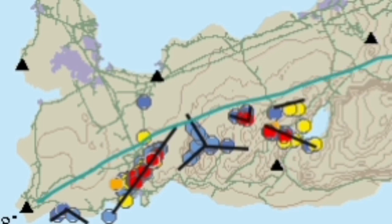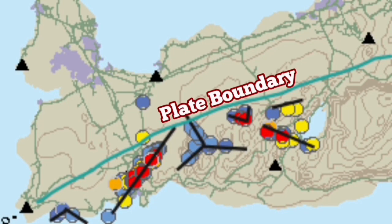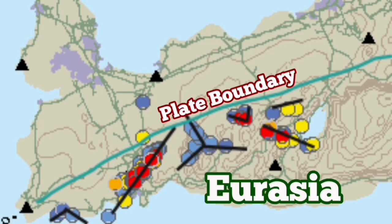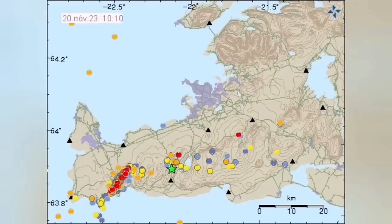These are all inside the Eurasian plate, where we have the pull of the plate subduction on the Pacific and the Amor plate, pulling down this direction.